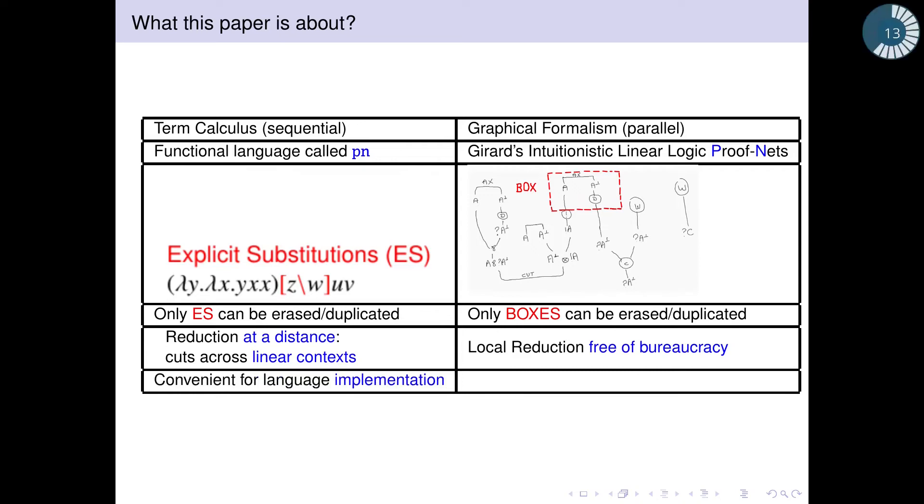The sequential model is more convenient to implement languages, abstract machines, etc., while the graphical model is more adapted to reason about semantics, and in particular quantitative semantics of programs. So it is important to understand the relation between these two models.